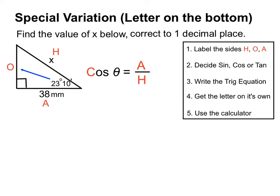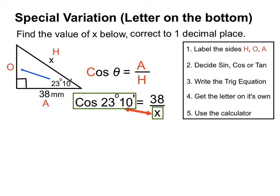Something interesting happens when we fill in the numbers. The angle is 23 degrees 10 minutes — each degree is broken into 60 parts, and there are 10 of those parts in this angle. This time the number goes on top and the letter x goes on the bottom of the fraction, because the letter is on the hypotenuse. This is the first time we've seen x on the bottom.